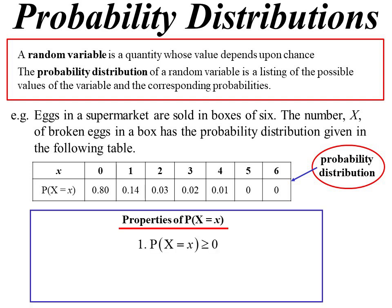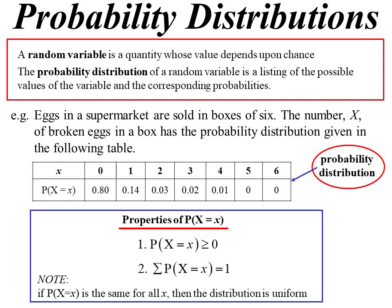Properties of the probability P(X=x): it's a positive number since we're talking about probability, and all of them add up to one because you must cover every possibility. If the probability is the same for everything, we have a uniform distribution.